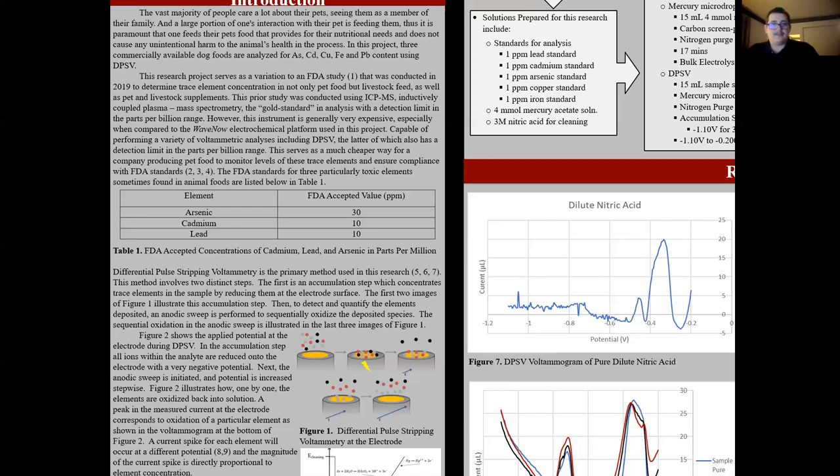This particular research project is a variation of an FDA study that was conducted in 2019 to determine trace concentrations in not only pet food but also livestock feed. The prior study was conducted using ICP-MS or inductively coupled plasma mass spectrometry, the gold standard for analysis with a detection limit in the parts per billion range.